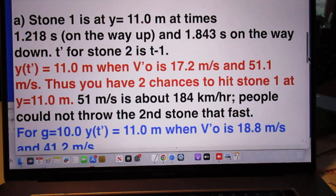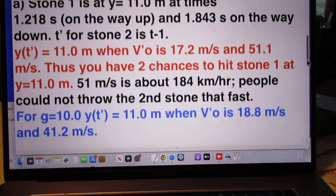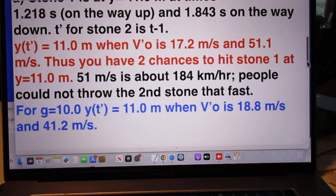t prime for stone 2 is t minus 1 because we throw stone 2 one second after we have thrown stone 1.